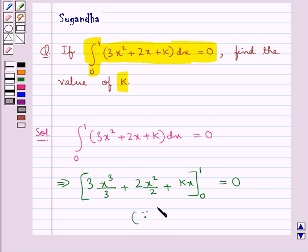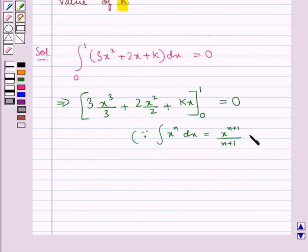Since we know the integral of x to the power n dx equals x to the power n plus 1 over n plus 1, and the integral of a constant k dx equals k times x.